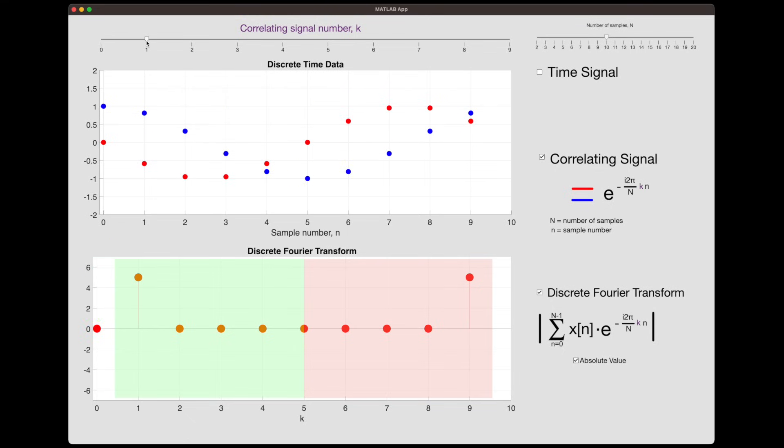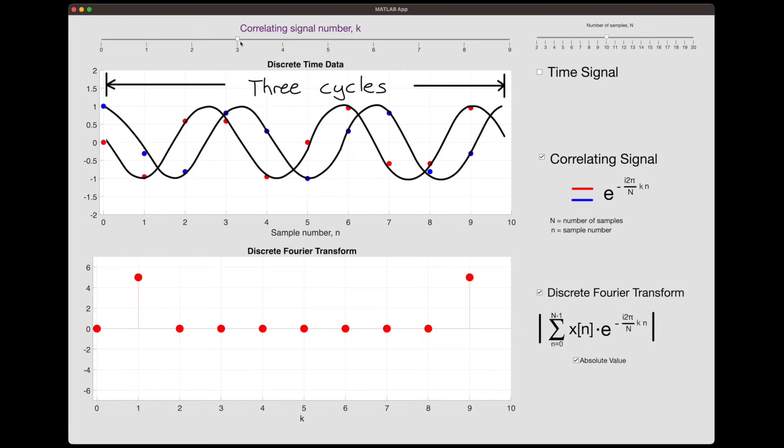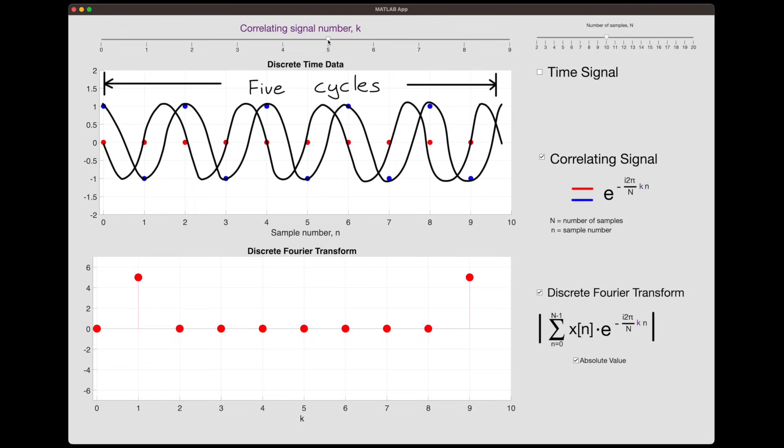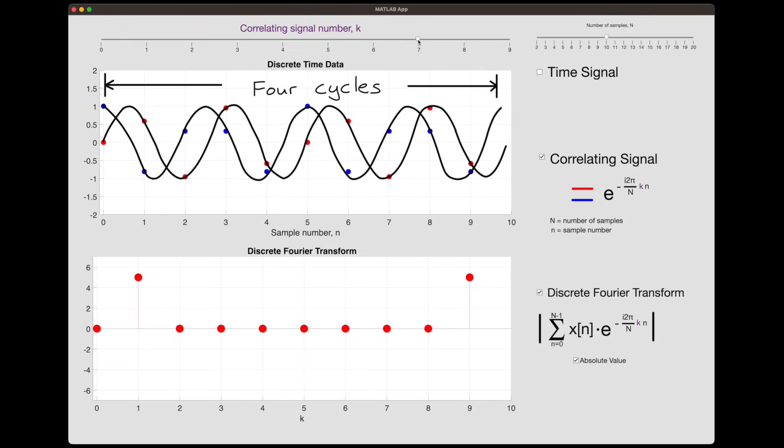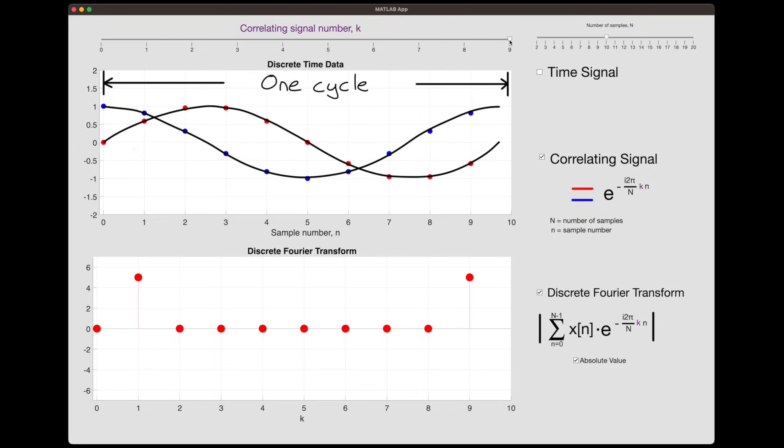But for k equals one, the frequency has a period of the length of the time signal. And going to k equals two, the frequency has a period one over two of the length of the time signal. And this continues as k increases, we get one over three, and one over four, and so on all the way up to the Nyquist frequency. Now, I know that this is going to be a little hard to see. But if we increase k beyond this point, the frequency starts to decrease. And not just that, but the frequency is also negative. And we can see that a little bit easier here. Notice that between k equals nine, which is the lowest negative frequency, and k equals one, which is the lowest positive frequency, the correlating signal is the exact same frequency, it's just negative.